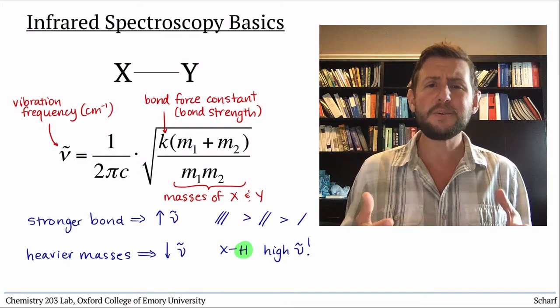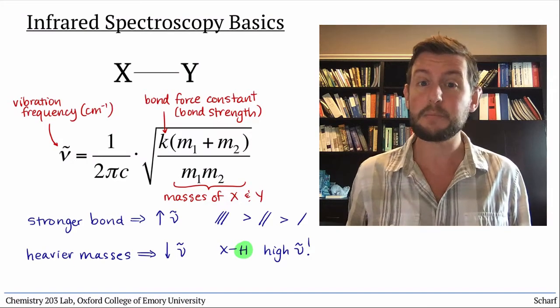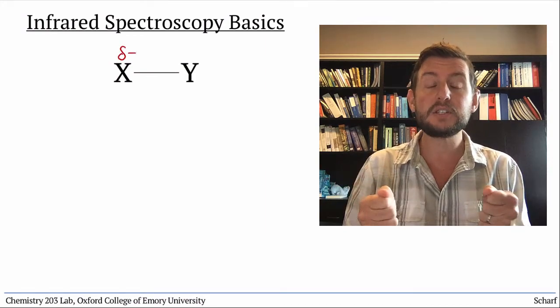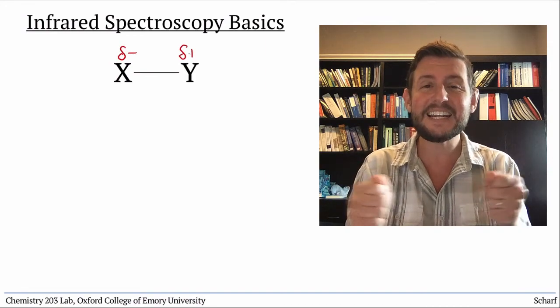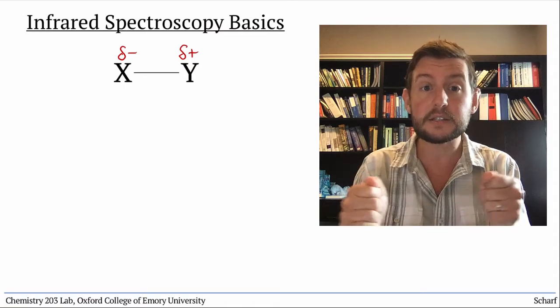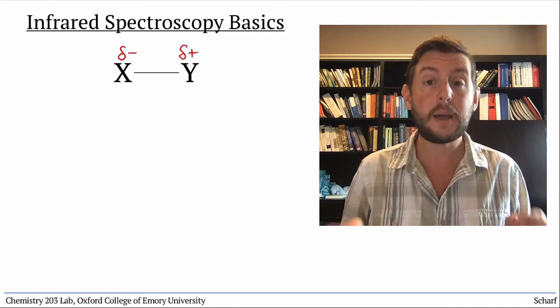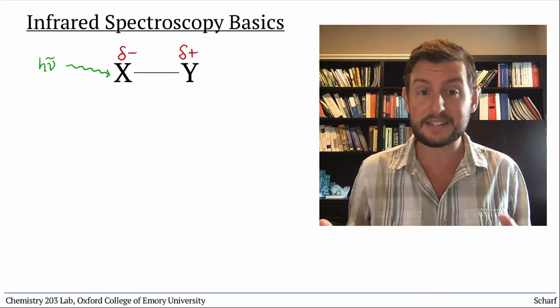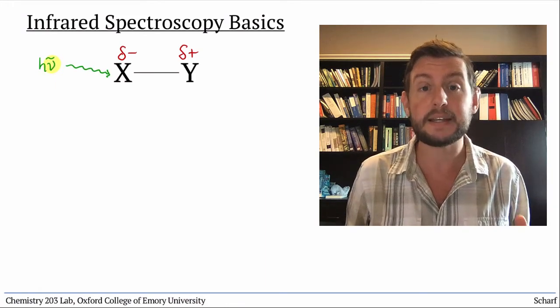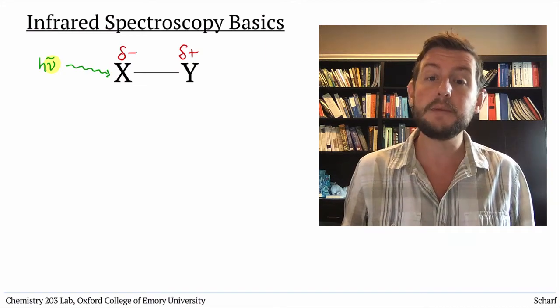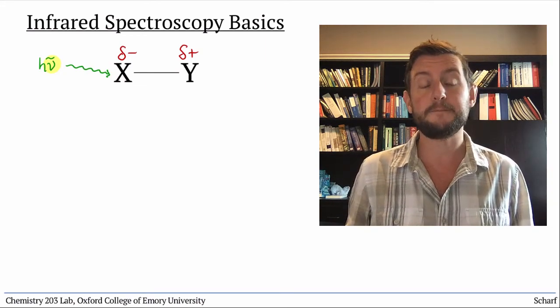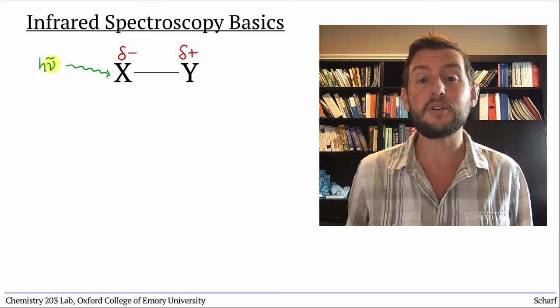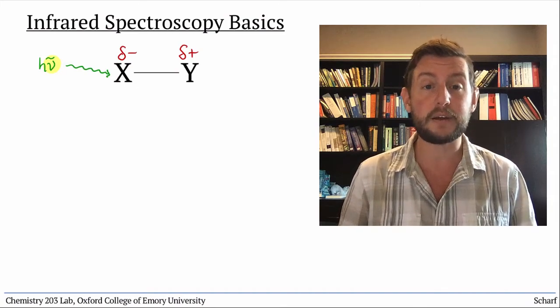So how do we actually detect these vibrations? For polar bonds, the vibrations correspond to tiny oscillating charges, and if these oscillating charges match the frequency of a photon, which is itself oscillating electromagnetic radiation, then those photons can be absorbed by the molecule. It happens that infrared or IR radiation matches the frequencies of bond vibrations.